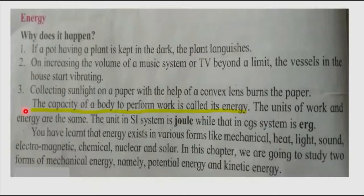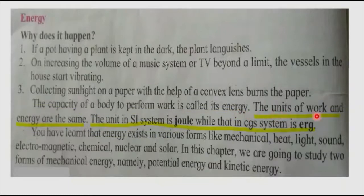Now let's see the definition of energy. The capacity of a body to perform work is called its energy. Every object has a different capacity to do work and hence has different energy. The units of work and energy are the same. Hence, the unit of energy in the SI system is Joule, while that in the CGS system is Erg.